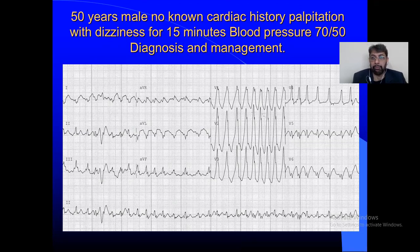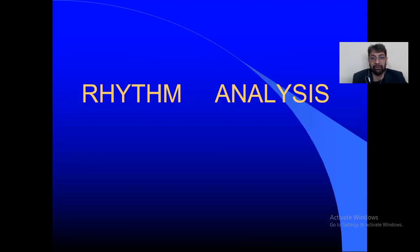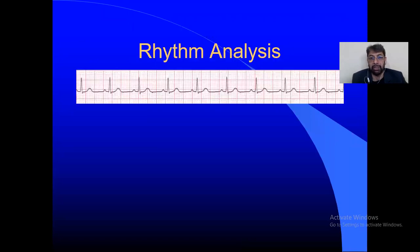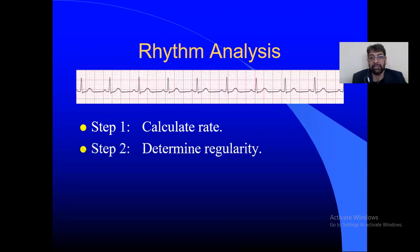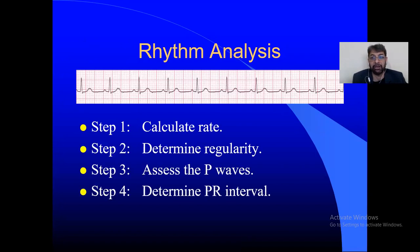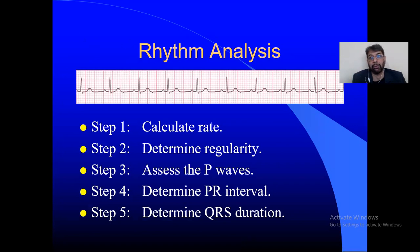I'll give you a brief hint towards assessing rhythm. Whenever you are assessing rhythm, go with this summary: rate, regularity, P wave, PR interval, and QRS duration or QRS morphology. If you focus on these five points, you will never be mistaken in assessing rhythm.